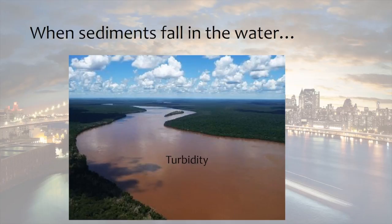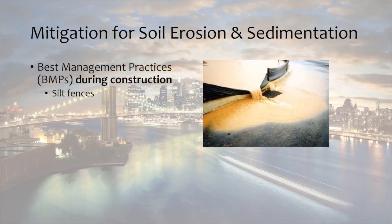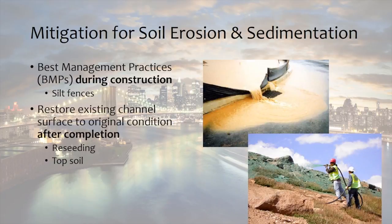Think back to your activity. What did you do that contributed to the loss of sand from the cups? When did you lose sand — was it during construction or after completion? What could you do to mitigate soil erosion and sedimentation that causes turbidity? You could use best management practices during construction, like silt fences, to collect most of the sediments while allowing cleaner water to pass through. You could also restore the existing channel surface back to its original condition by reseeding and adding topsoil. We can try to prevent the problem during construction or remediate the problem after construction.